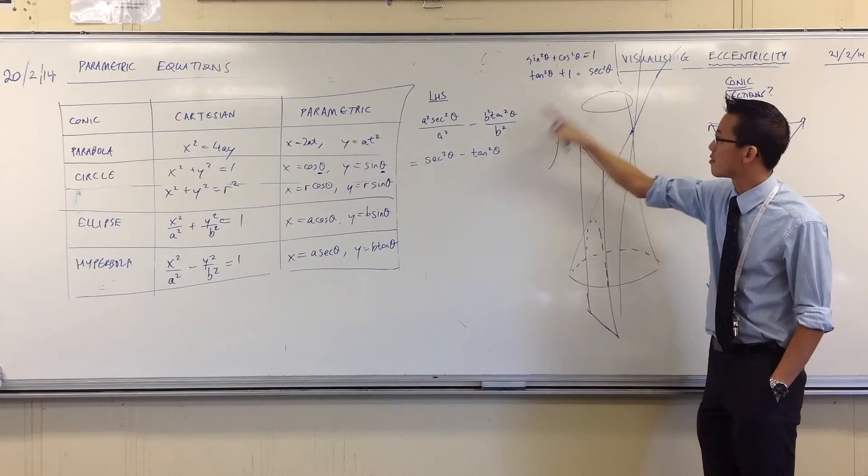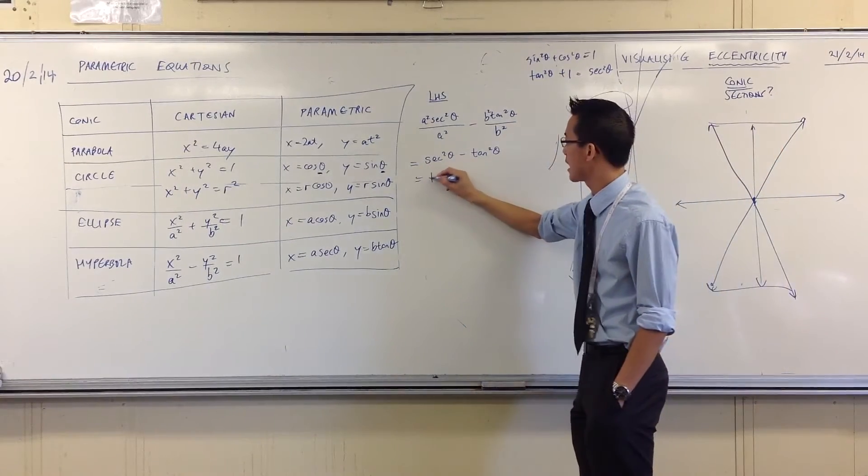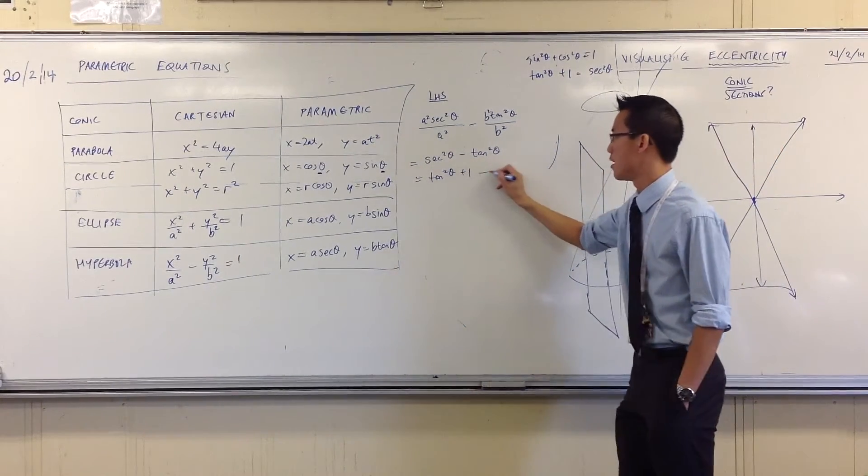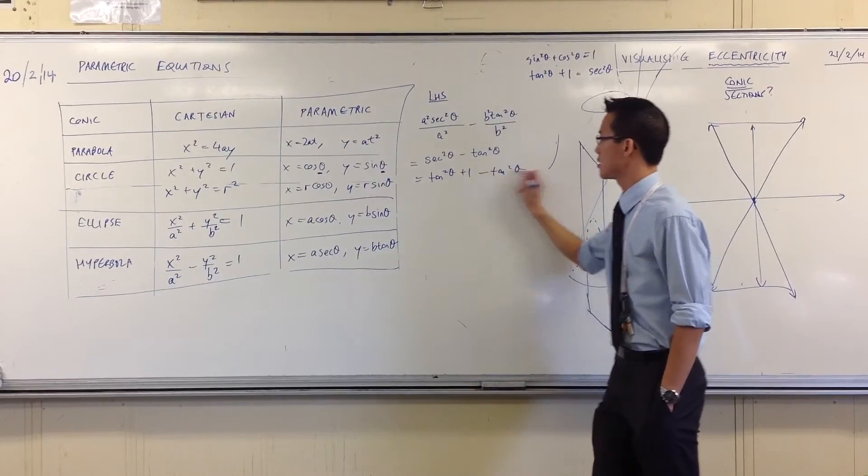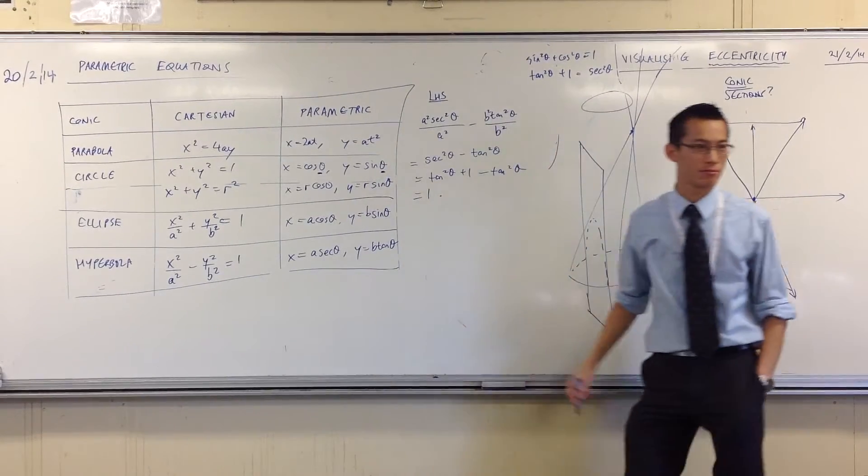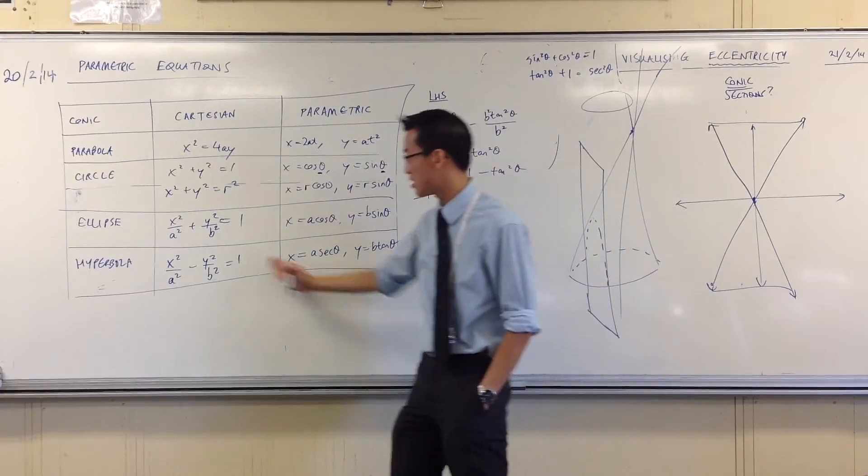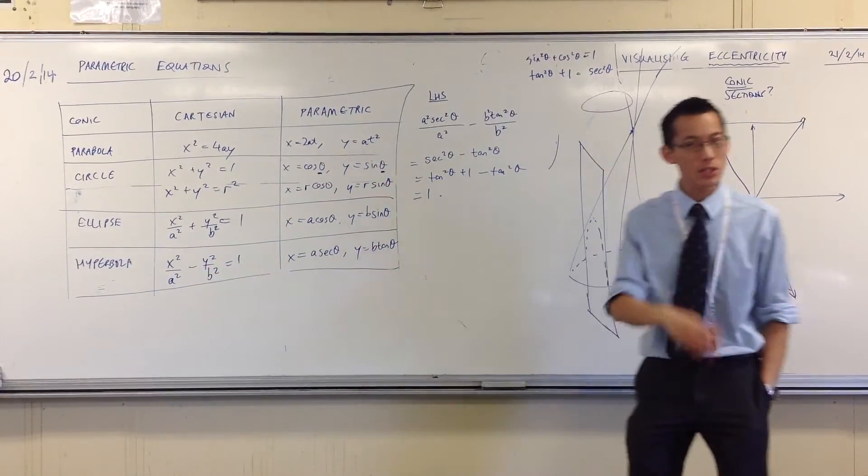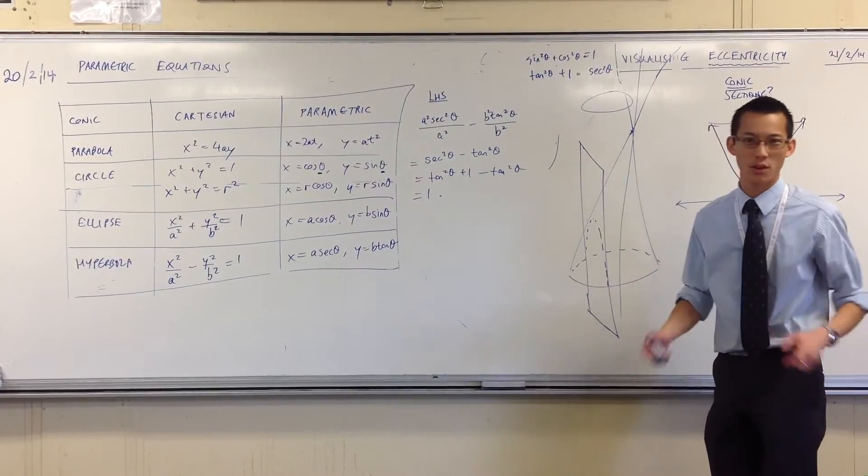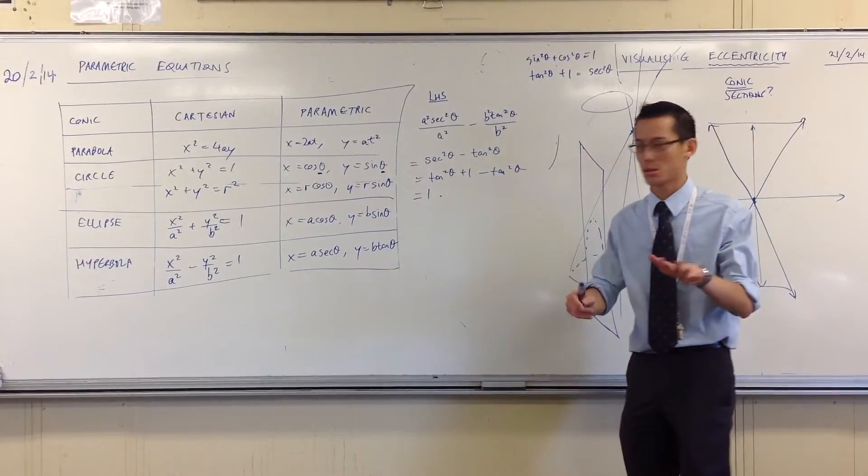Therefore, I'm going to stick that in there. So I get sec squared equals tan squared plus 1, minus tan squared, which is the one that I was expecting. Thank goodness. So this works. It does actually satisfy the Cartesian equation. Alright? As for the proof, you can look it up, but it's kind of long and involved, and I don't think it's that beneficial for you guys.